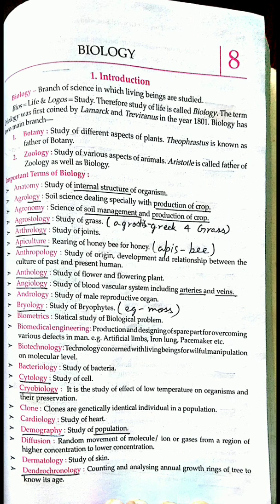We are going to discuss the biology section of the Elucent book. The first topic is the important terms of biology — the different branches of biology that are studied, such as anatomy, agrology, etc. We will be doing this part on important terms of biology in two parts; this is the first part.